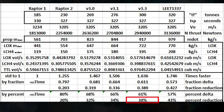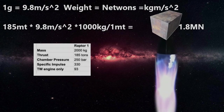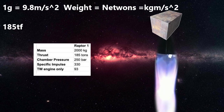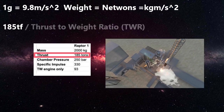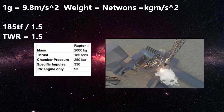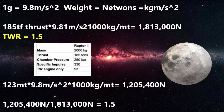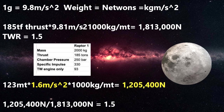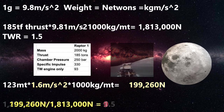Some of you dared to suggest I had gotten something wrong in the last lesson — let's see if they are right. We were talking about using a single Raptor engine for a rocket, using the maximum thrust of Raptor 1 to calculate the maximum mass of the rocket, assuming a thrust-to-weight ratio of 1.5. With a thrust of 185 tons, we got a mass of 123 tons. On the Moon, gravity is not 9.8 meters per second squared but only 1.62, dramatically dropping the weight of the rocket and changing our thrust-to-weight ratio from 1.5 to 9.